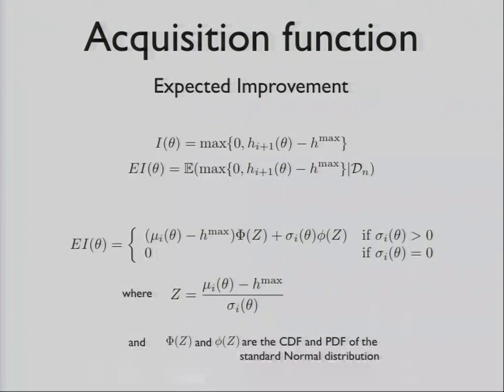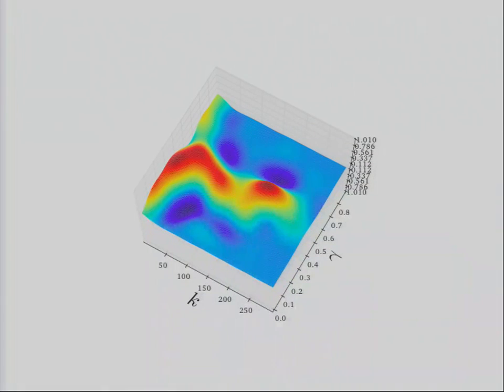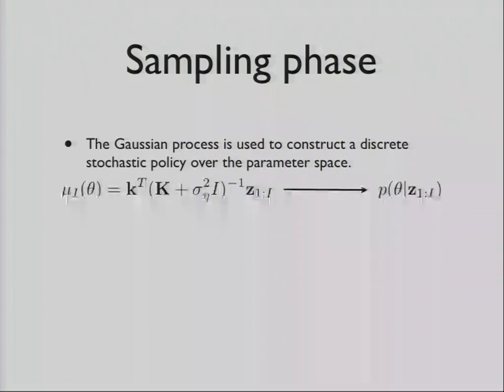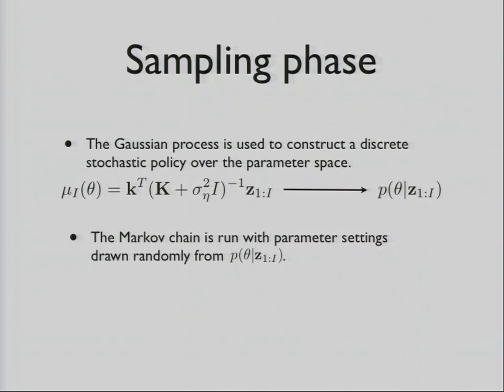We run this loop over and over again until we get this kind of surface. This is our model of what that objective function probably is like. At this point, we have to sample. So we use that Gaussian process model, that mean function, to create a stochastic policy. And then we run the Markov chain with those parameter settings.